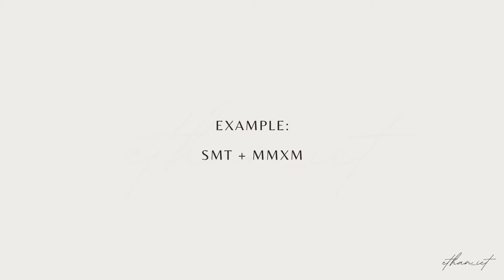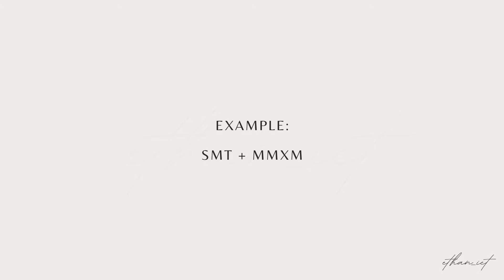Now that you understand what SMT divergence is, I'm going to be showing some trades I took based on SMT divergence, as this concept is a crucial part of my model. In these first examples, they are simply using SMT divergence and market maker models together to trade. My model is just: higher time frame PD array, SMT divergence within it, then I look for lower time frame structure, and number four is just trade management.